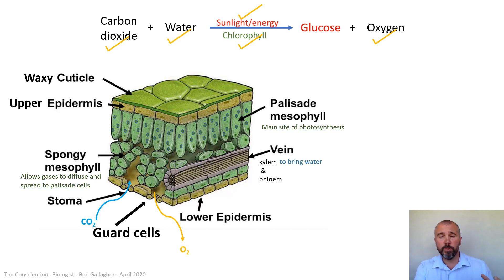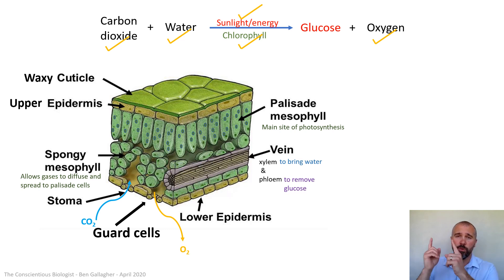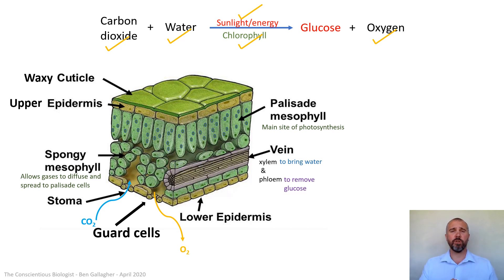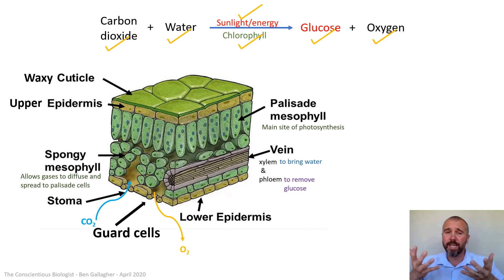Water comes up to the leaf through the xylem tubes — the veins running through the stem — so we can tick water on our equation. Glucose can't stay in the leaves; it's removed through the phloem tubes. The waxy cuticle is a waterproof layer to stop water evaporating out of the leaf, helping the plant retain the vital water it needs. The upper and lower epidermis are just skin layers — like skin covering your body — keeping the insides in and the outsides out.